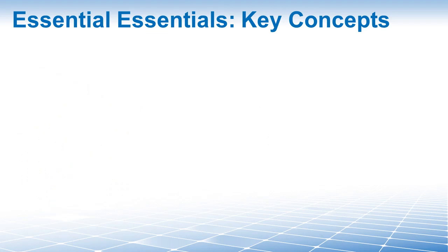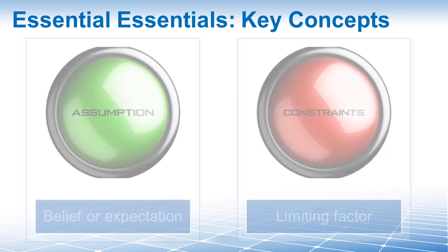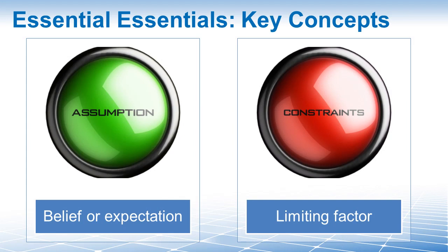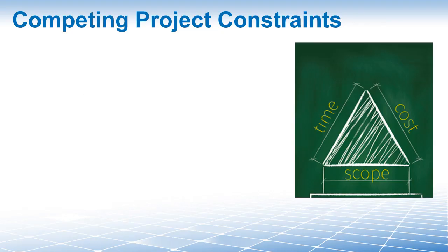Now let's talk about constraints. To do that, we also have to understand the concept of assumptions. Both assumptions and constraints are usually documented in your project management plan because they have such a great impact on the project. Assumptions are factors in the planning process that are considered to be true, real, or certain without proof or demonstration. A constraint, on the other hand, is a limiting factor that affects the execution of a project, program, portfolio, or process.